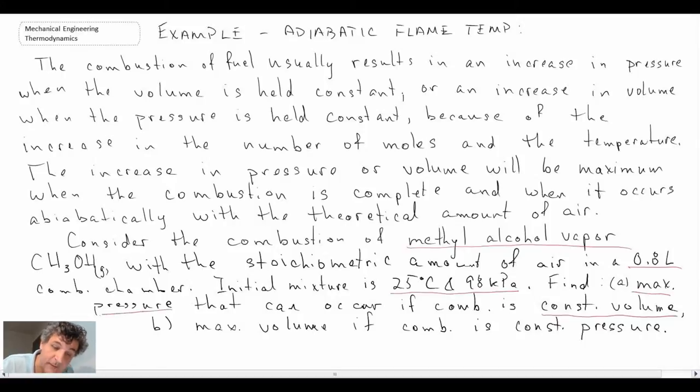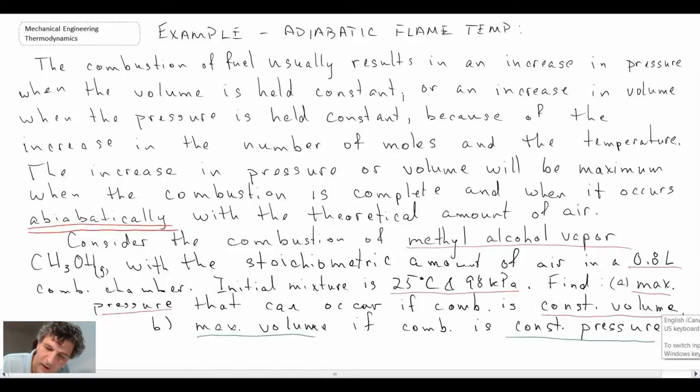That's the first thing. The other thing that they want us to determine is max volume if combustion is constant pressure. And what we are to assume is that this is taking place adiabatically, which is specified here. So what we need to do is calculate the adiabatic temperature, and then with that we can determine these values. So let's proceed with what we know and what we don't know and try to work this problem.